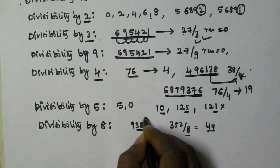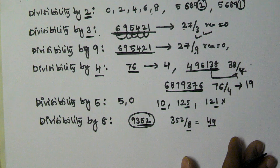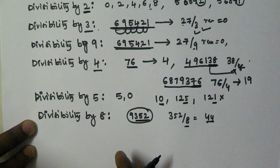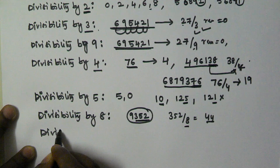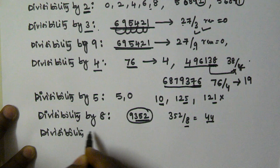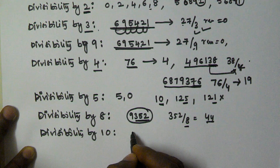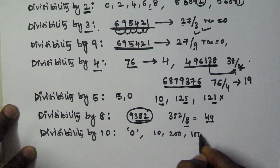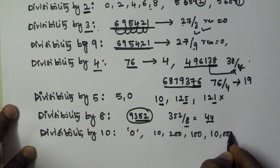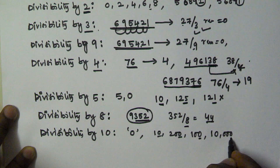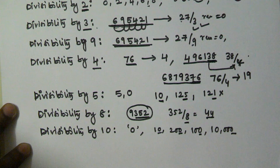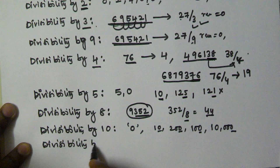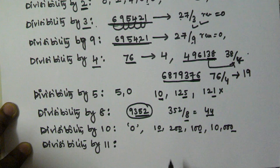Now, divisibility by 10. If the unit digit is 0, then that number is divisible by 10. It is very simple. For example: 10, 200, 100, 10000 — the unit digits of these numbers are all 0, so they are all divisible by 10.